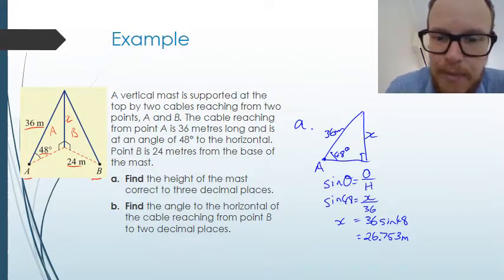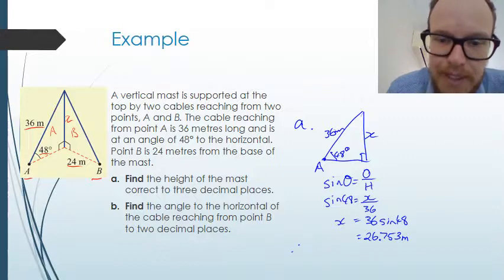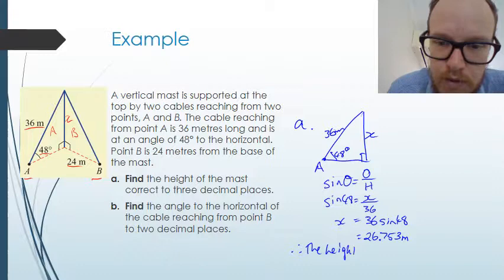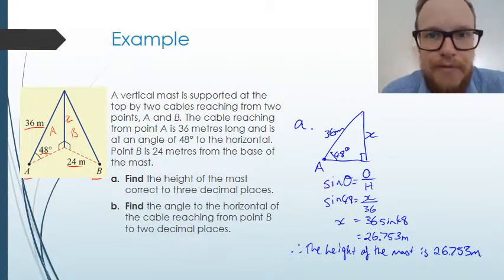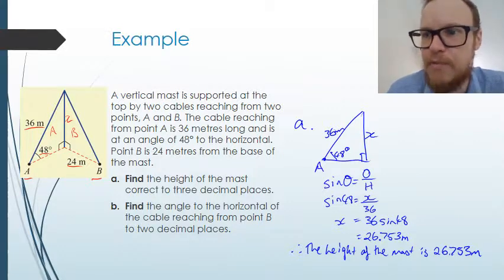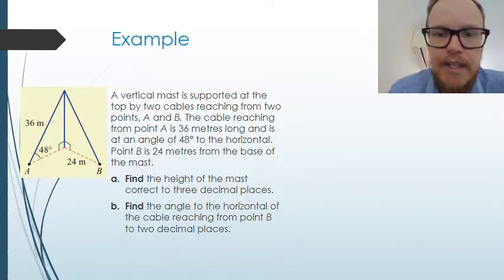So we've answered our problem. We need to draw it back to our three-dimensional problem though and say therefore the height of the mast is 26.753 meters. So we've answered that first part A and we can use that answer now to answer part B.